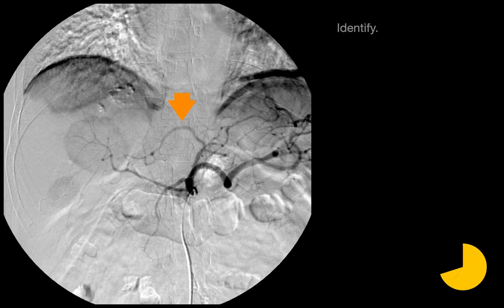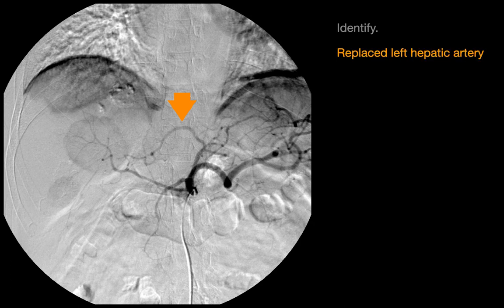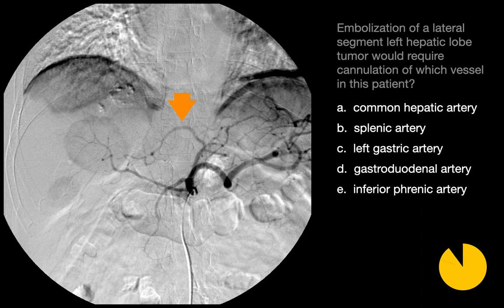This vessel is a replaced left hepatic artery. Embolization of a lateral segment left hepatic lobe tumor would require cannulation of the left gastric artery, which would provide access to this replaced left hepatic artery.